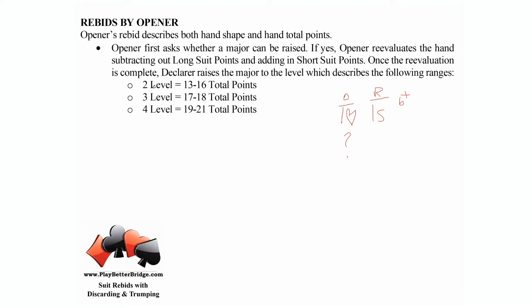You rebid at the two level with 13 to 16 total points, rebid at the three level with 17 to 18 total points, and rebid at the four level with 19 to 21 total points. Now there's a little catch here.